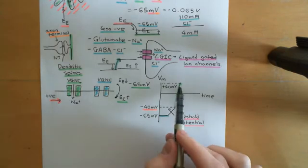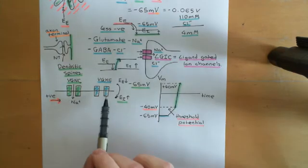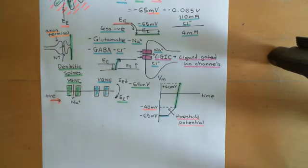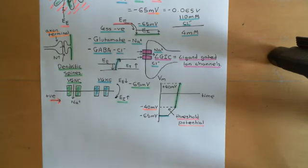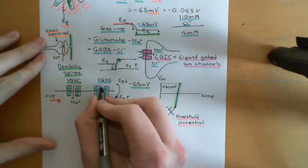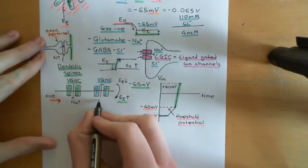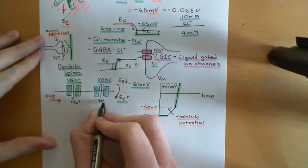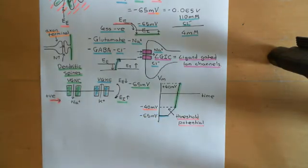The electrical gradient at the moment is plus 40 millivolts, so the intracellular electrical potential is 40 millivolts higher than the extracellular electrical potential. Potassium, as a positively charged ion, wants to go where the electrical potential is lower, which at the moment is the extracellular compartment. So initially, both the concentration gradient for potassium and the electrical gradient acting on potassium are in agreement and are saying go out. So you're going to get a lot of potassium going out initially.